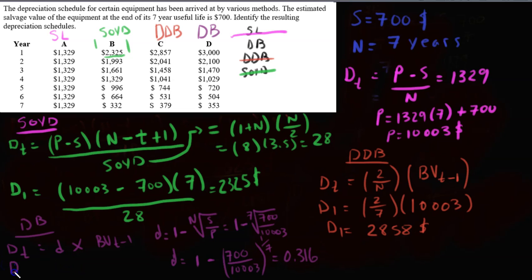So for example at year 1, D1 equals 0.316. The book value at t minus 1, 1 minus 1, so the original price is $10,003, gives us the value of 3161, which sort of corresponds to D, but it has to be D, so it's D.